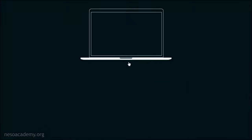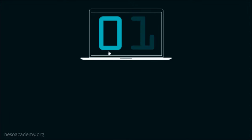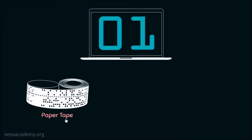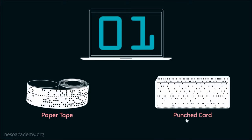Now we all know computers are electronic machines, or in other words, they understand only zeros and ones. Therefore, in early days of computation, instructions to a computer were given using perforated paper tapes and punch cards. In these, the presence of a hole is a representation of zero and absence means one. Now writing down instructions in the form of ones and zeros is pretty hectic.